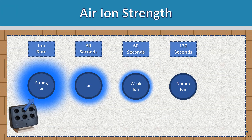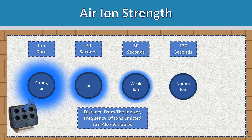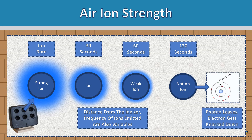Air ion strength: when the ion initially comes out of the ionizer, it's very strong. 30 seconds later, it's not as strong. 60 seconds later, it might become a weak ion. About two minutes later, it might no longer be an ion. This depends on many variables like the distance from the ionizer or the frequency of ions being emitted. Eventually the photon leaves, the electron gets knocked back down, and that's why it's no longer ionized.